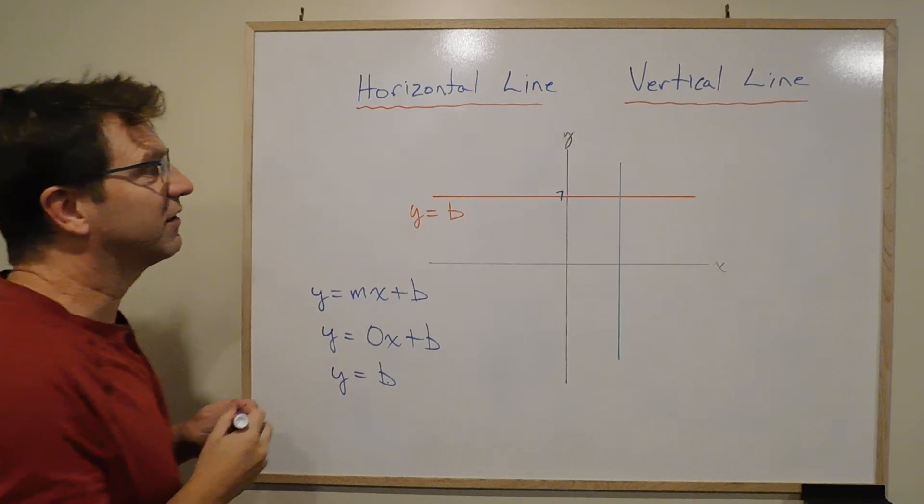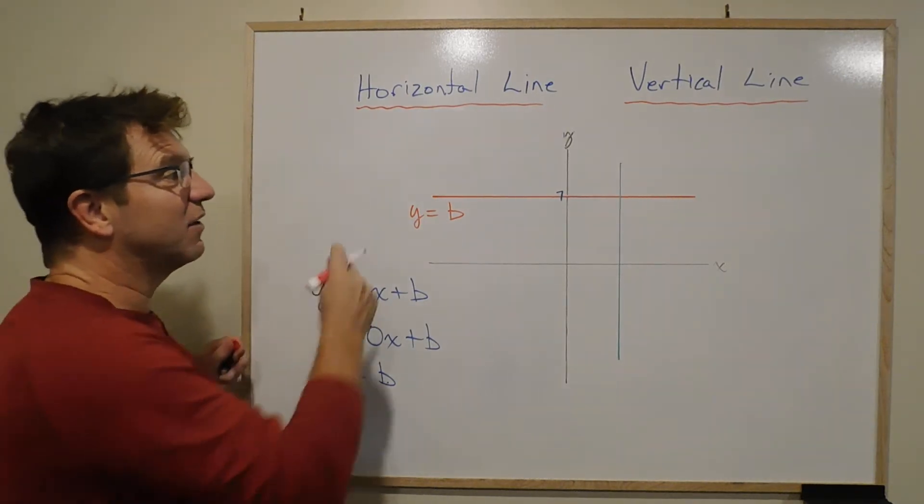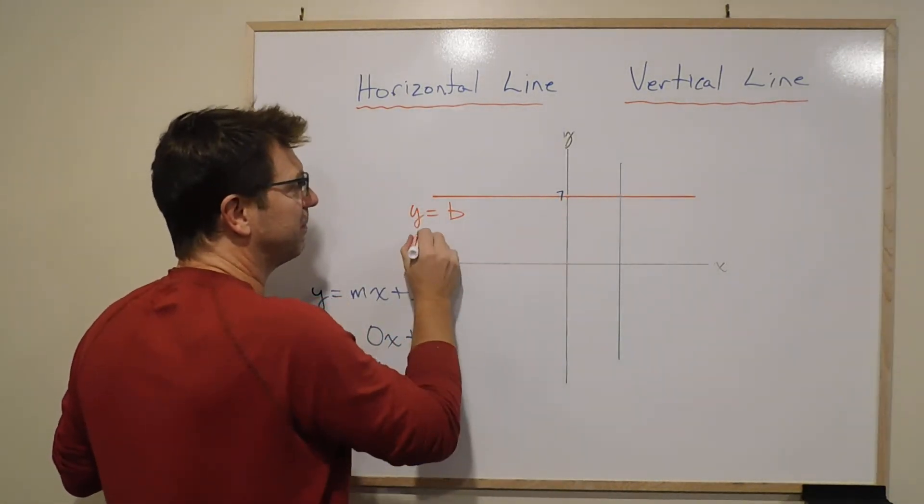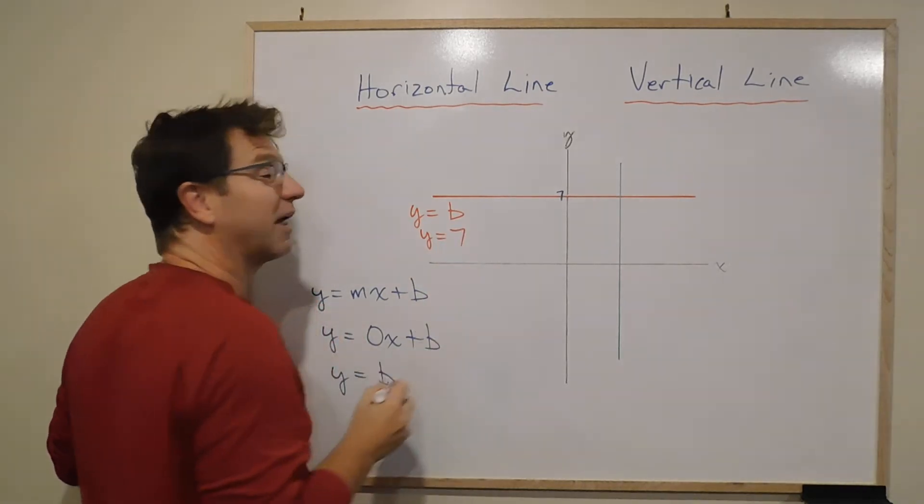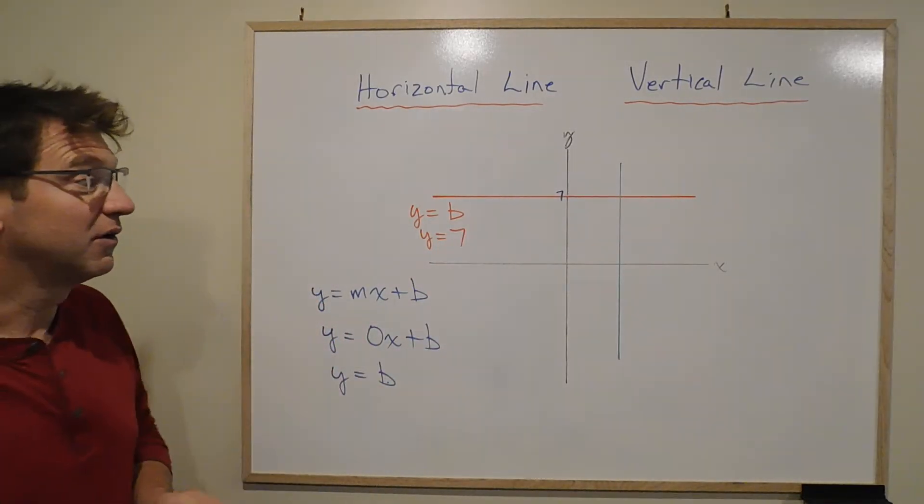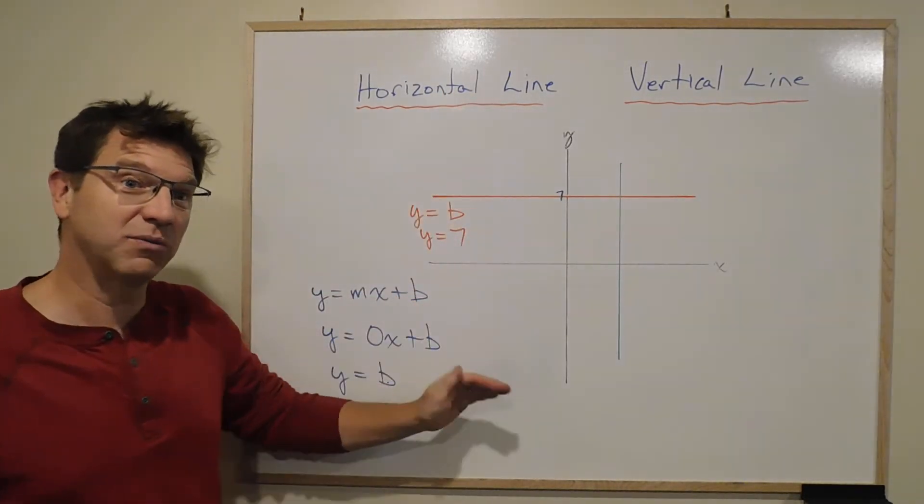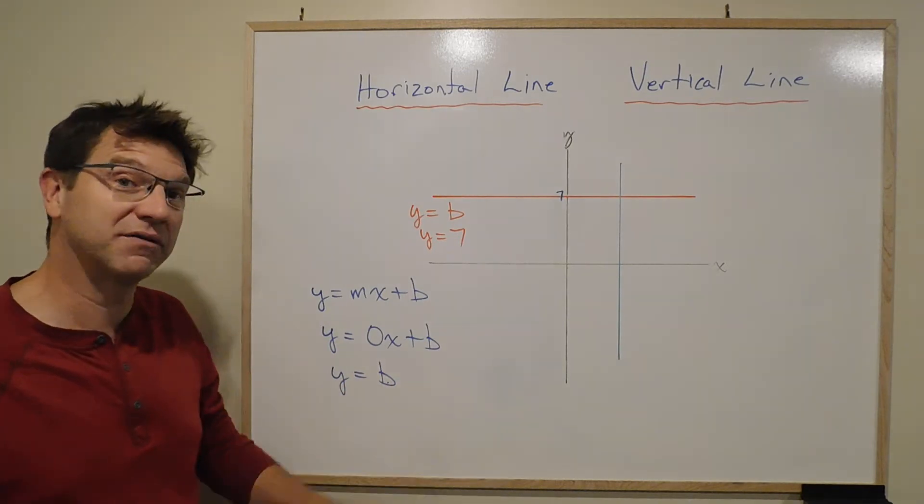If it crossed at 7, then the equation of that horizontal line would just be y equals 7. And it's true for wherever it crosses—it's just y equals a number. There's no x value involved at all.